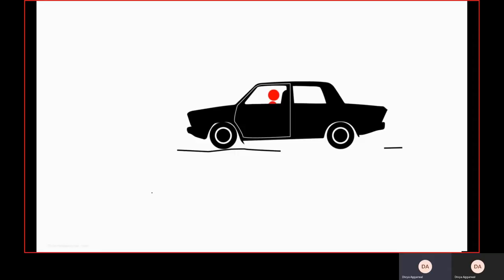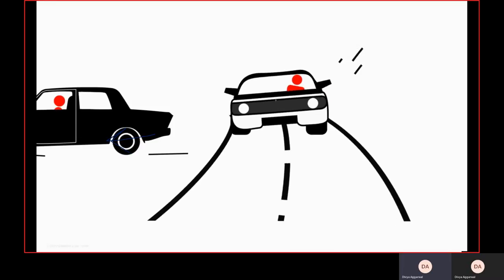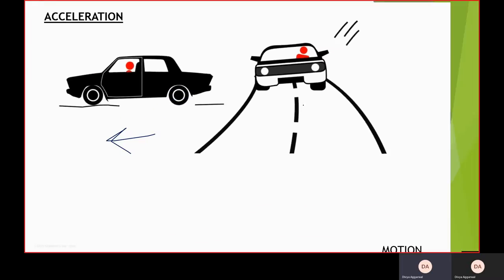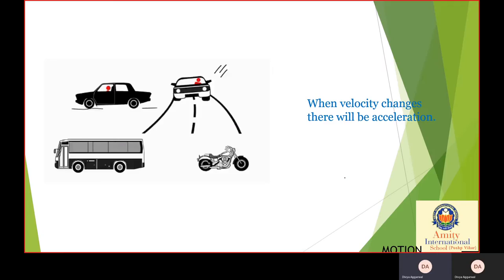Now acceleration. Suppose that there is a person who is moving in this direction with a constant speed and he applies a brake suddenly. In which direction do you think he will move? He will move in the forward direction. Now if this person is taking a turn, the direction of the turn is right, so he will move in the left direction. In both of these cases, I will say that acceleration is happening.